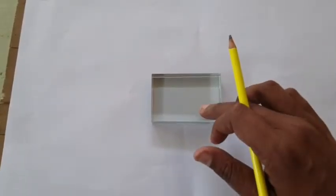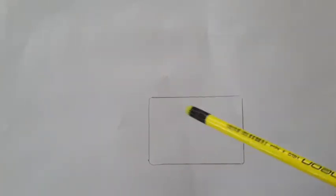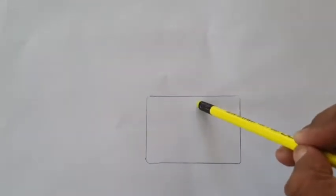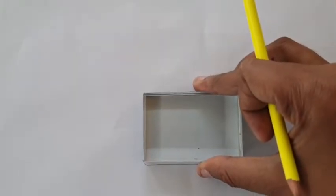Once we have marked the outline, now arbitrarily we would be choosing an angle of incidence and mark the incident ray. And then we will once again place the glass slab in its position.